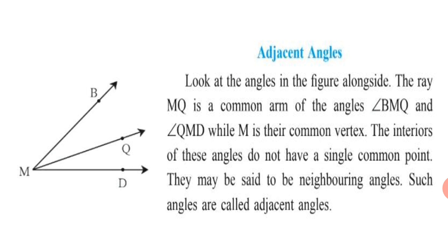Angle BMQ and Angle QMD have a common vertex M, and MQ is the common arm. The interiors of these angles do not have a single common point, so they may be said to be neighboring angles. Such angles are called adjacent angles.